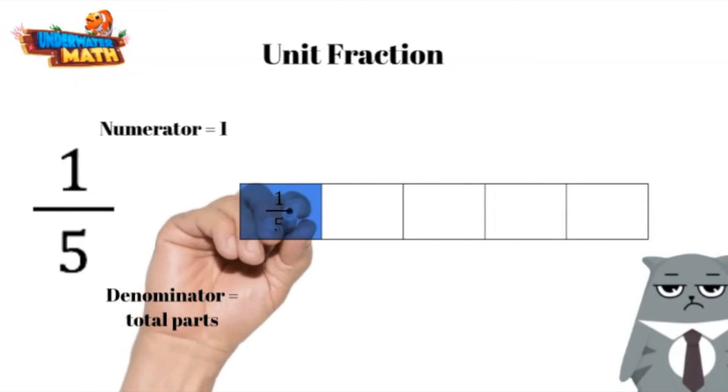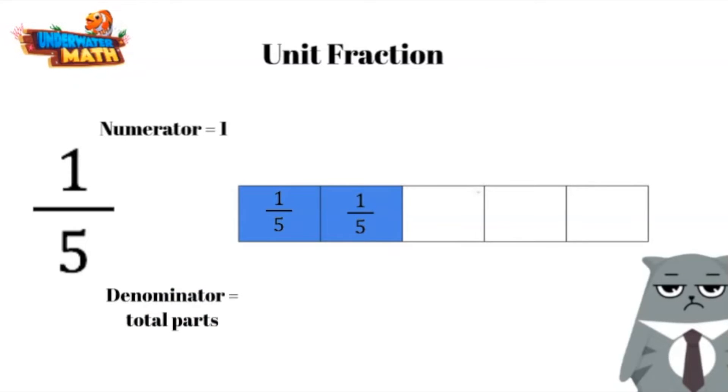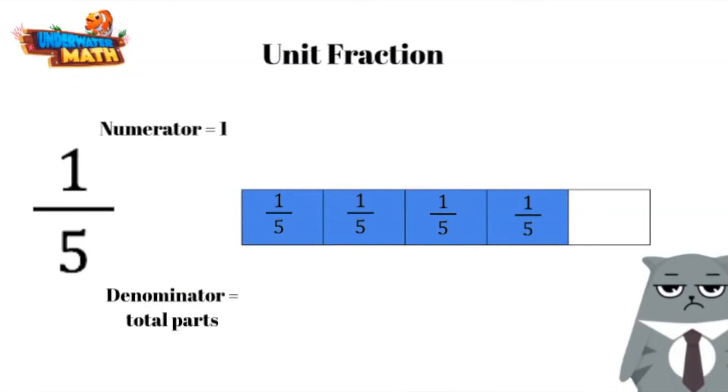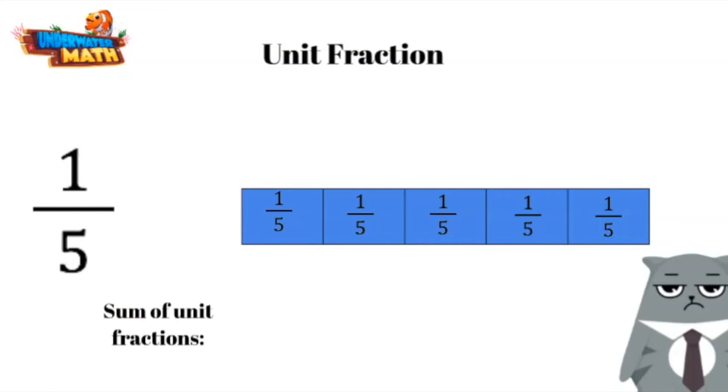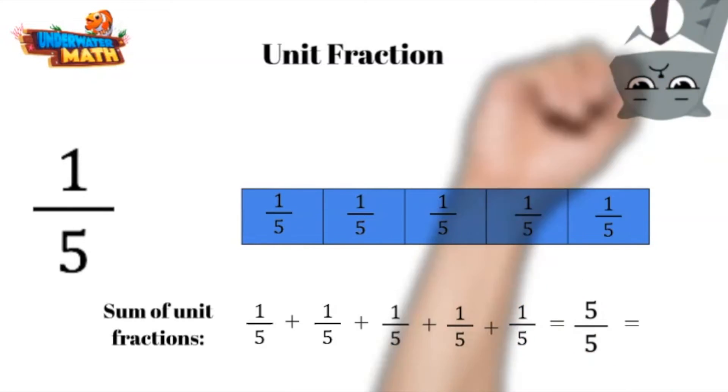Each of these unit fractions can be written as one-fifth. We can represent this area model with the sum of unit fractions that make up all the shaded parts. That means you add them all up. That's right, and when we add up all the unit fractions in this model we get five-fifths, which is one whole. Right again.